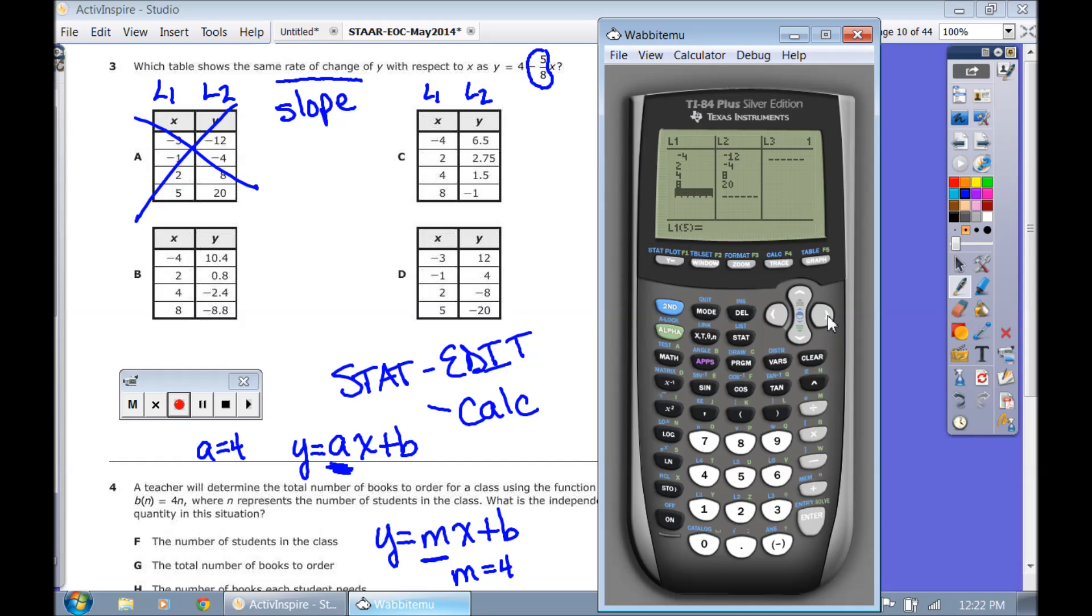Type in all of your y values. And realistically, since we know this is a line, you only need two points. You can just type in two x, y values. But just for the sake of argument, we're going to type in the entire table. Go back under stat calc number 4. Scroll down to calculate. Hit enter.